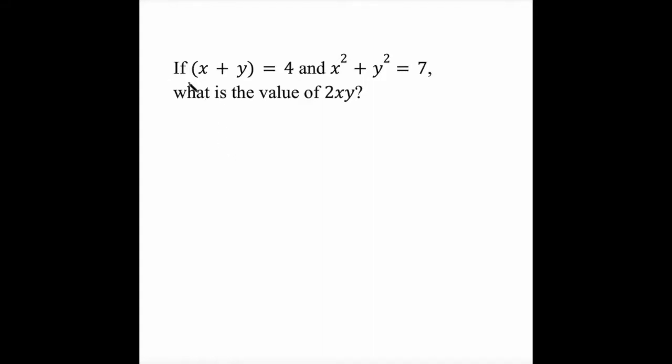Let's try this GRE quant problem. If x plus y equals 4 and x squared plus y squared equals 7, what is the value of 2xy?